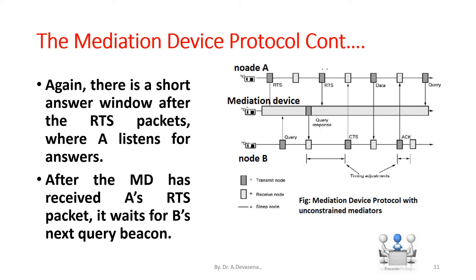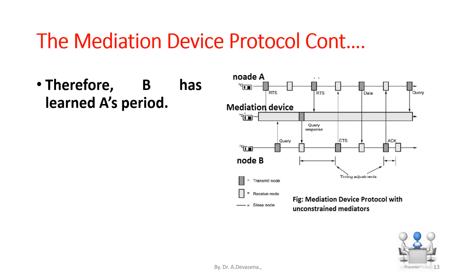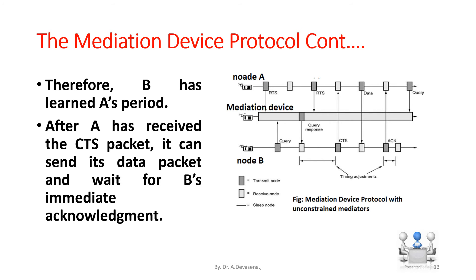After the mediation device MD has received A's RTS packet, it waits for B's next query beacon. The mediation device MD answers this with a query response packet indicating node A's address and a timing offset, which lets node B know when to send the answering Clear to Send, CTS, to node A such that the CTS packet hits the short answer window after node A's next RTS packet. Therefore, node B has learned node A's period. After node A has received the CTS packet, it can send its data packet and wait for node B's immediate acknowledgement.